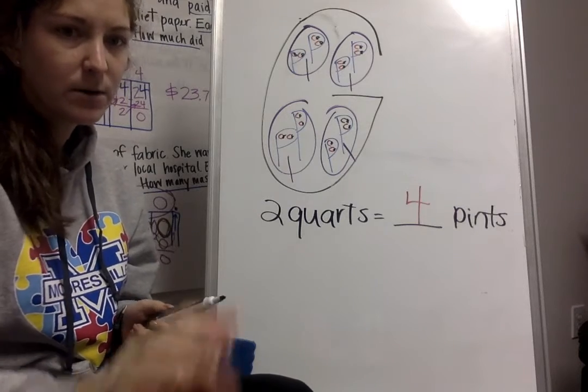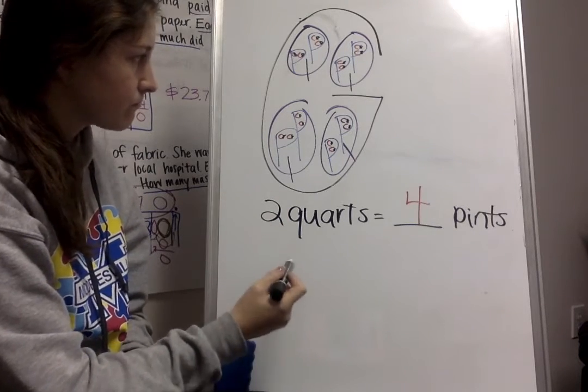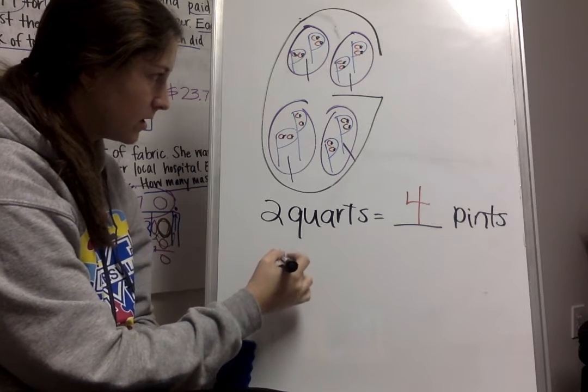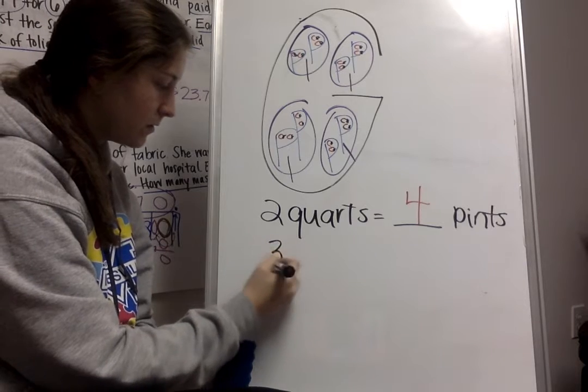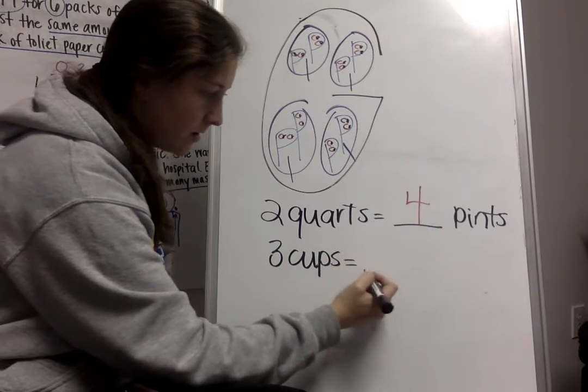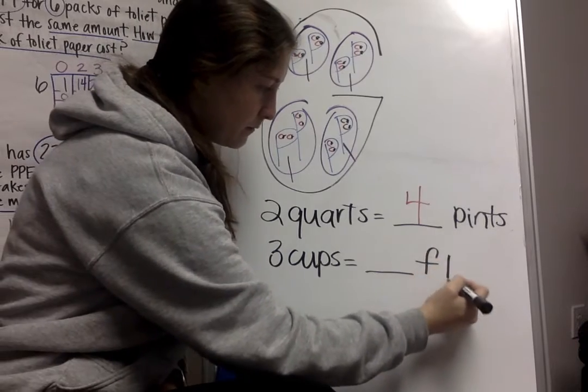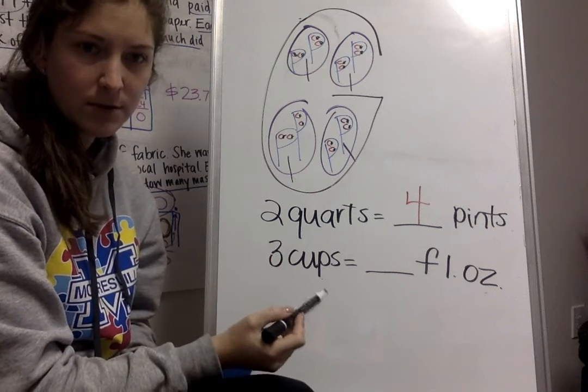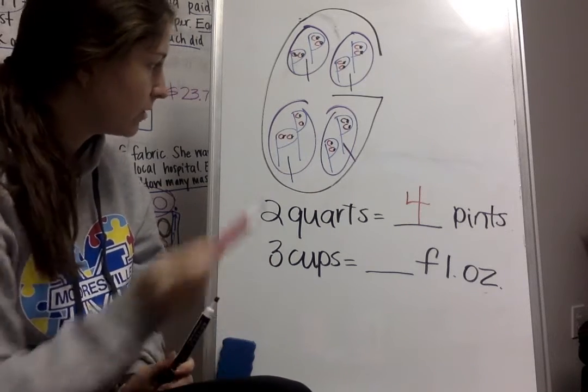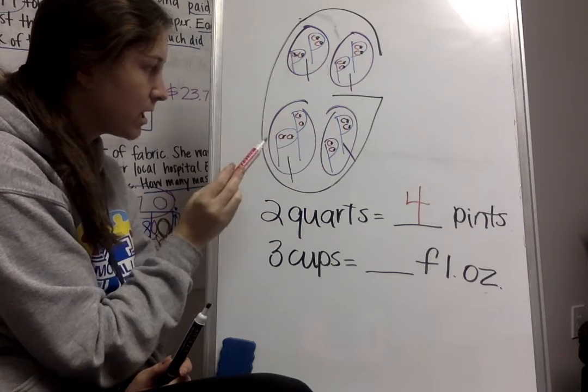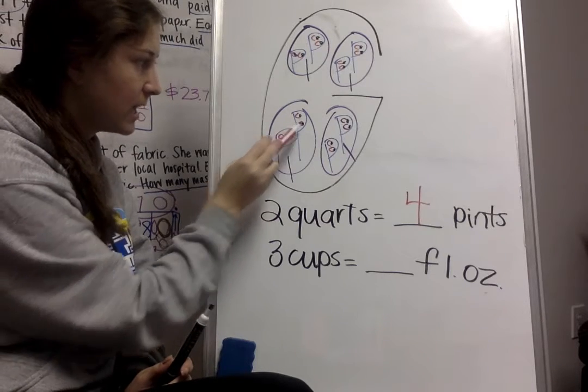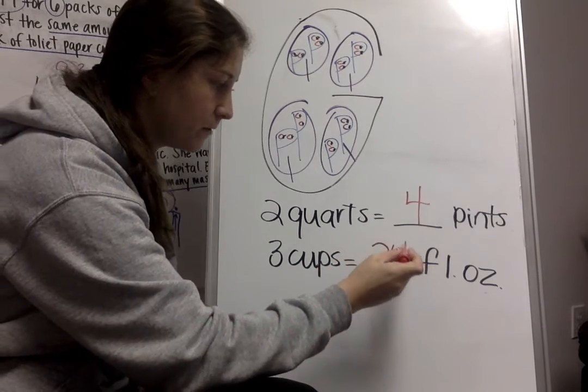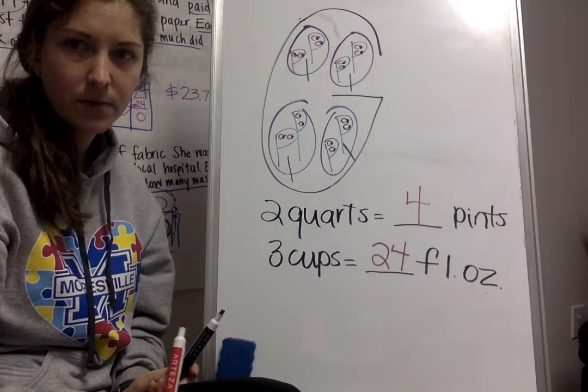So now if I were to ask you, three cups equals blank fluid ounces. So how many fluid ounces would there be in three cups? Well, I can go and look. One, two, three cups, and there's eight, eight, eight. So I know that eight times three is 24, so there would be 24 fluid ounces in three cups.